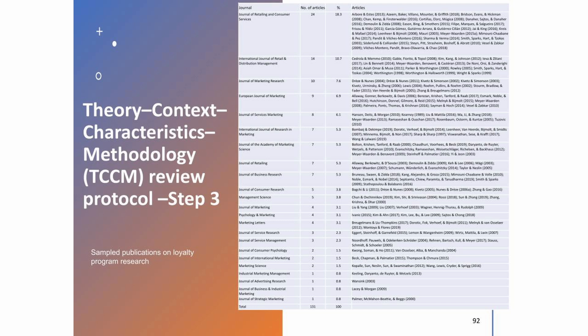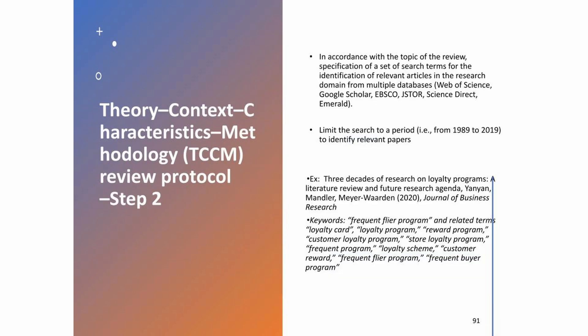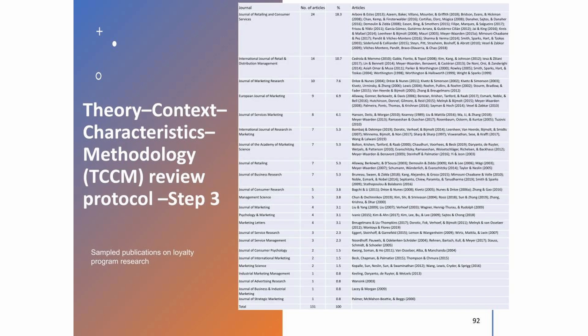Once you have a list of articles, here is a sample of the publications on loyalty programs as an example. The sample we found was published mainly in Journal of Retailing and Consumer Services — 24 articles, about 80%. Then International Journal of Retailing and Consumer Services at almost 11%, Journal of Marketing Research at 7.6%, European Journal of Marketing at 7%, Journal of Service Marketing at 6%, International Journal of Research in Marketing at 5%, and so on. In total, we found something like 130 papers published on the topic of loyalty programs.